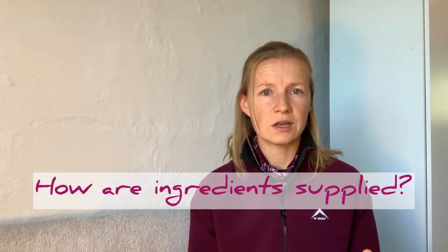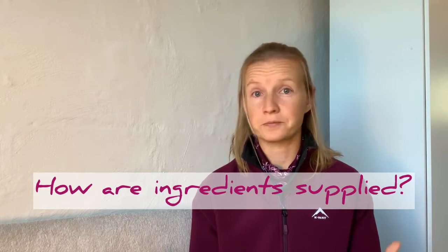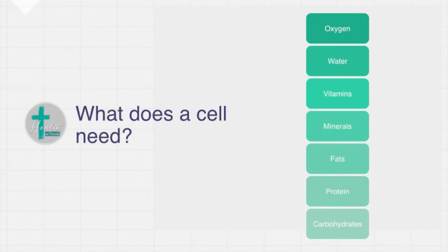You might ask the question: how does a cell get all of these things that it needs to stay alive? Just like the buildings in a city where there is a roadway system that brings delivery vehicles, or in the same way that you've got electrical lines and pipelines for water — in the same way, cells get their supplies from the blood. Every cell has to have a constant supply of oxygen. Every minute that the oxygen supply is cut off from any cell, that cell is busy dying or getting damaged. Every cell needs water, vitamins and minerals, proteins, carbohydrates, fats. These things have to be supplied to every cell constantly.